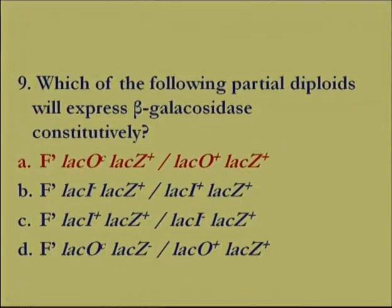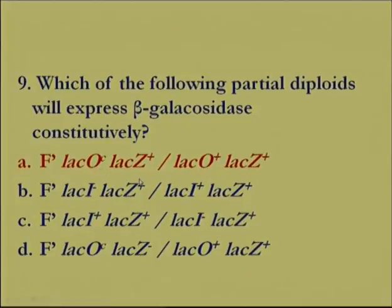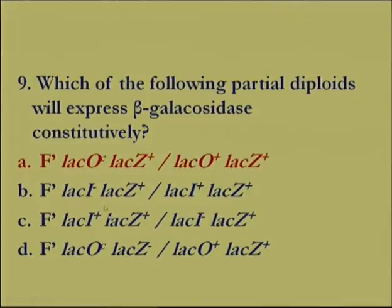Question 2 asks which partial diploid will express beta-galactosidase constitutively. Drawing a bacterial cell with a prime factor and bacterial chromosome, marking all mutations, helps resolve this. Option A, where the prime factor carries an OC mutation and wild-type lac Z, will result in constitutive expression. In option D, OC mutation is present but lac Z is mutated, so no functional beta-galactosidase results. Therefore the correct option is A.